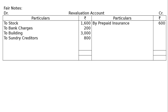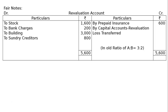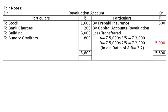Now totaling: the debit side totals Rs.5600, and the credit side has prepaid insurance Rs.600. So 5600 minus 600 = Rs.5000, which is a revaluation loss to be transferred in the old ratio of A to B which is 3 is to 2. A gets Rs.5000 × 3/5 = Rs.3000, and B gets Rs.5000 × 2/5 = Rs.2000.